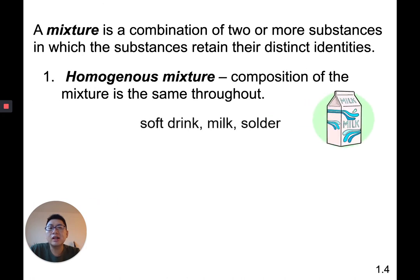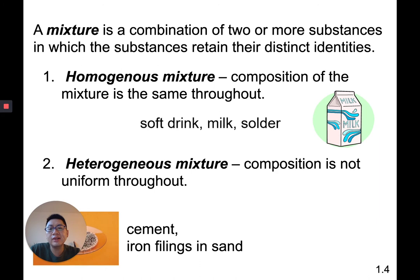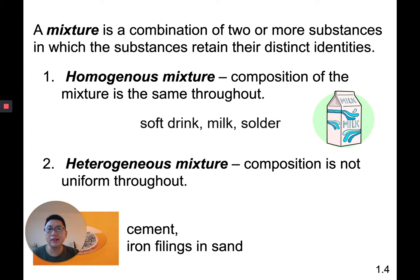A mixture is a combination of two or more substances that retain their distinct identities. There are two types: homogeneous and heterogeneous. Homogeneous means the composition is the same throughout — examples are milk or a soft drink. If someone pours you soda from a two-liter bottle, you don't expect one cup to be sweeter than another; it's the same throughout.